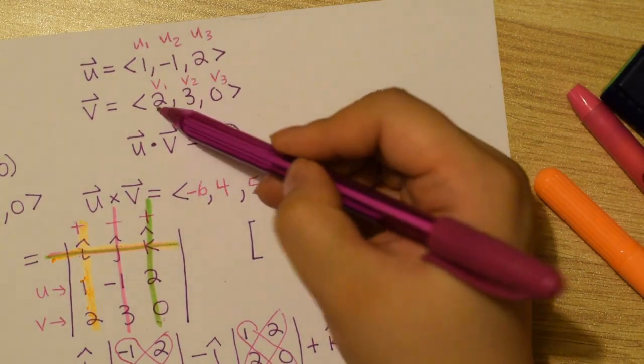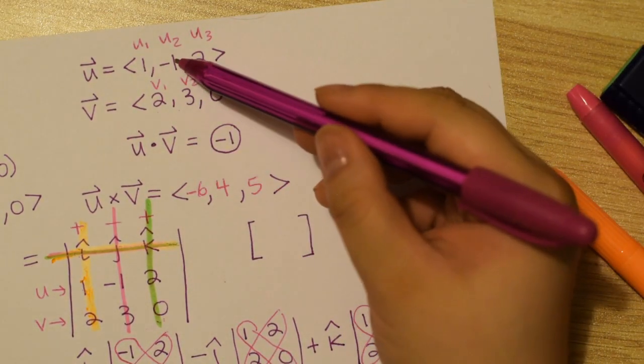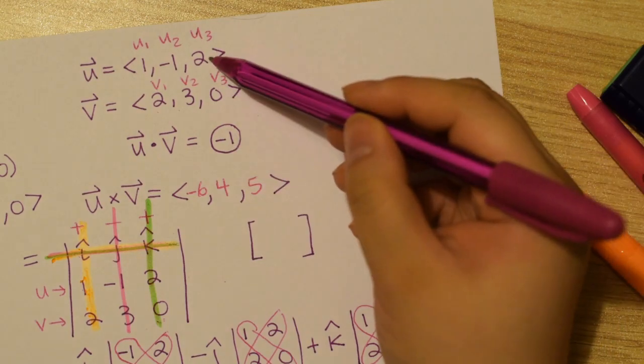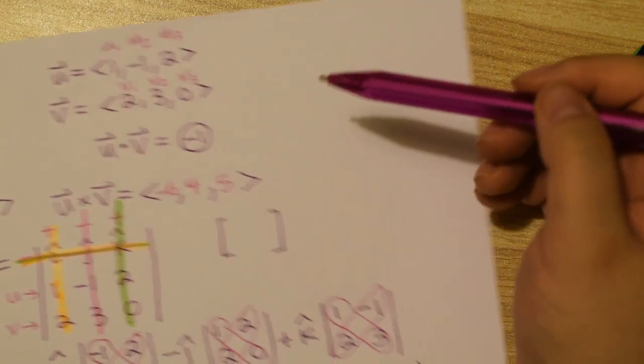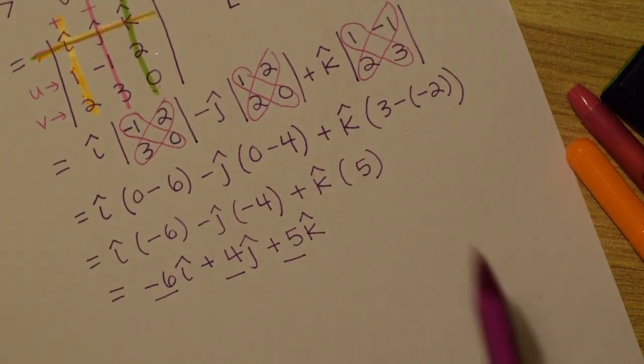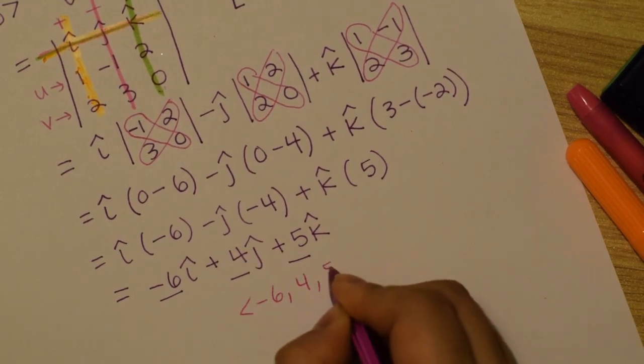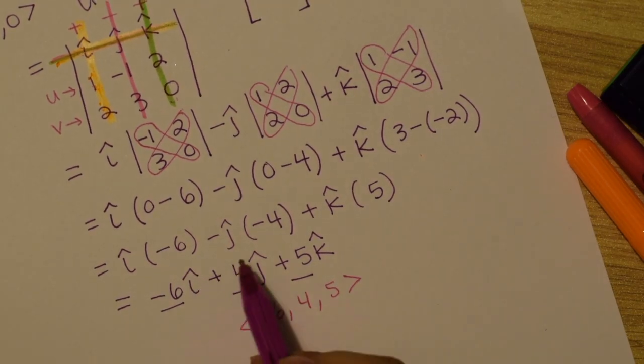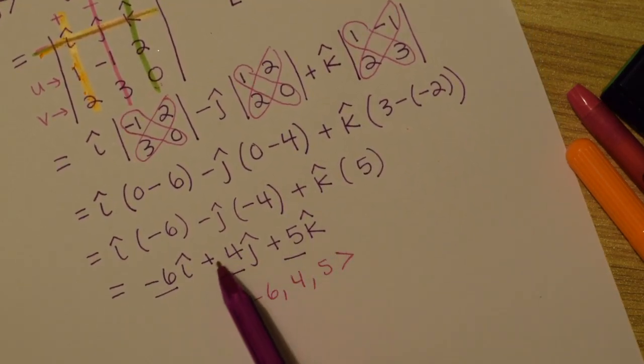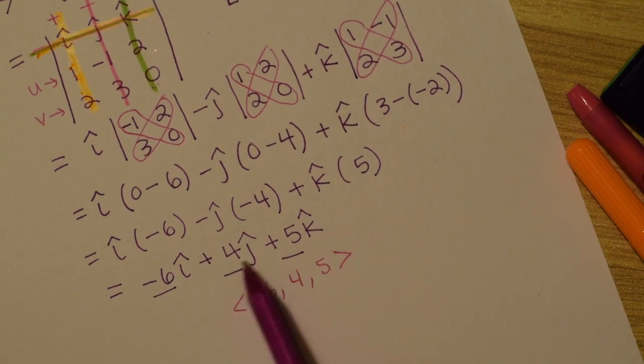So again, to emphasize, 1 times 2 is definitely not negative 6. Negative 1 times 3 is not 4. And 2 times 0 is not 5. So not just that. And just really briefly, for those of you who are not as familiar with the i hat, j hat, k hat notation here, basically the reason you can just take the coefficients is by the nature of the additive and multiplicative identity.